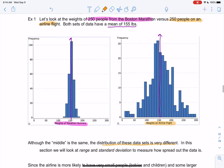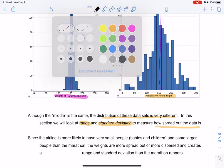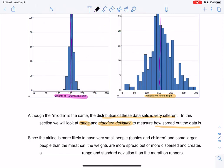And so let's see. We're going to define these new words called range and standard deviation so that we can talk about the differences of these graphs. And so those are going to measure how spread out the data is. So the airline, since it's more likely to have very small people like babies and children and probably some larger people than the marathon, the weights are more spread out, right? On the right graph, it's just more spread out. The data goes farther in both directions. And so that's going to create a larger range and standard deviation, which we will define very shortly.